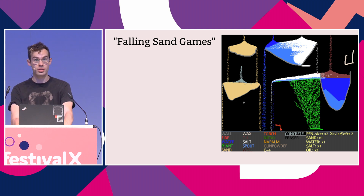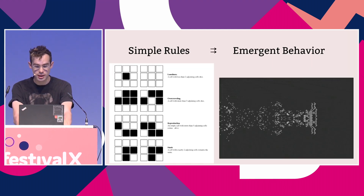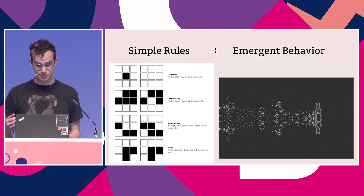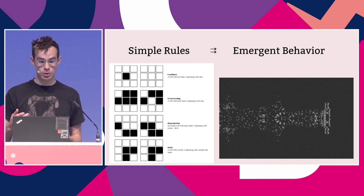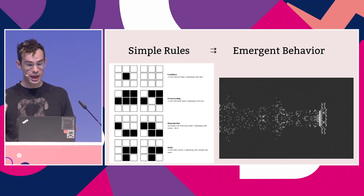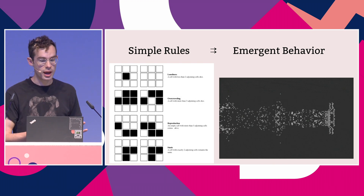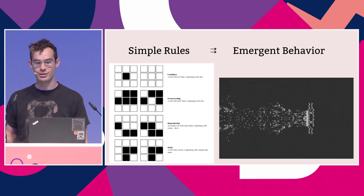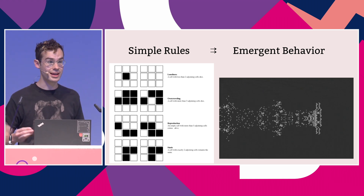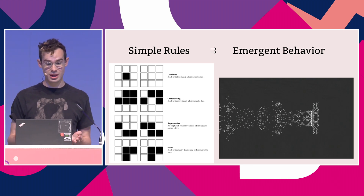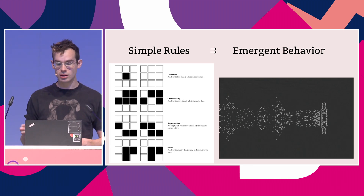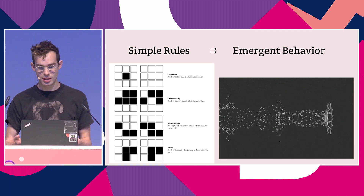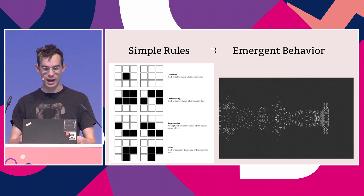They share a lot in common with cellular automata and things like Conway's Game of Life. In particular, they have the same kind of really cool behaviour where you have very simple rules, and when you let those play out, you get really amazing, complex, emergent behaviour. And it can be really surprising to even the person who set up those rules — you can never expect exactly what you'd get just from reading the conditions. It's much more complex.